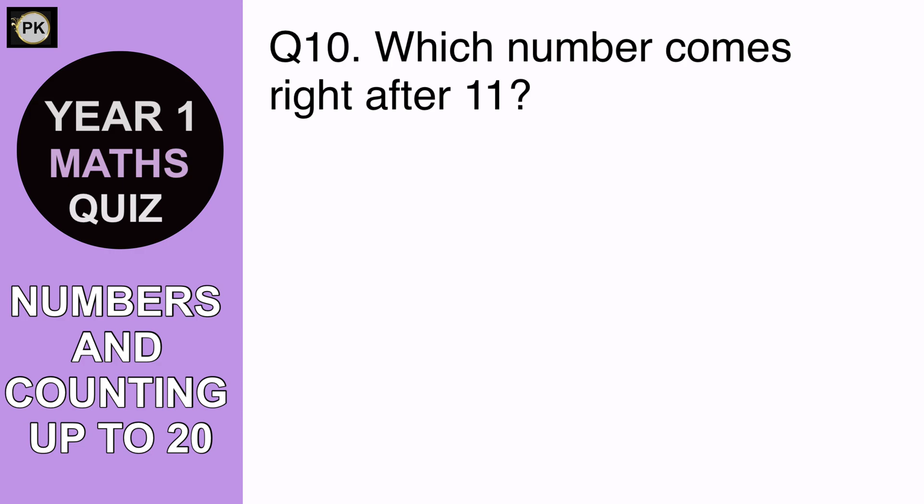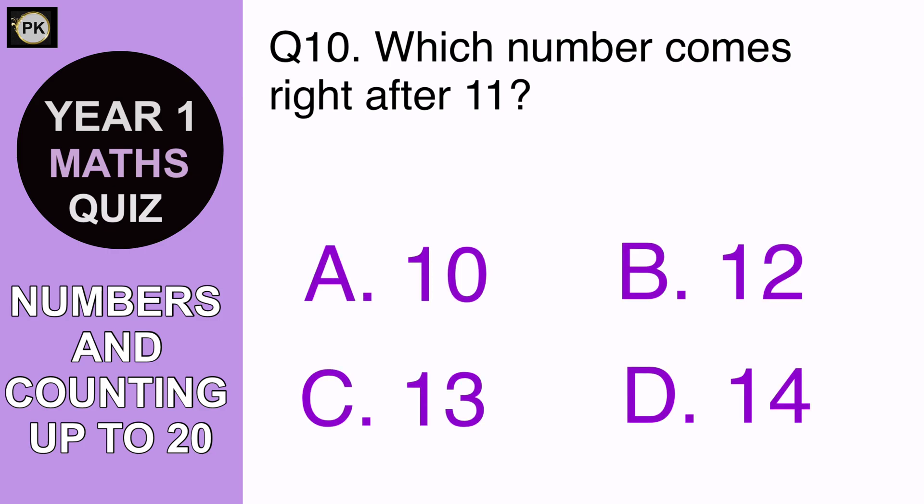Which number comes right after 11? A 10, B 12, C 13 or D 14. And the answer is B 12.